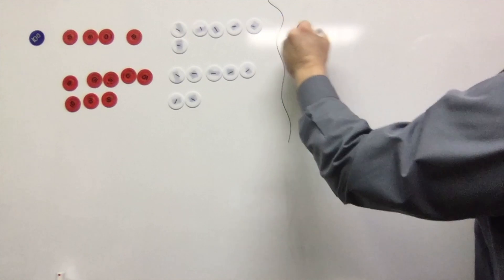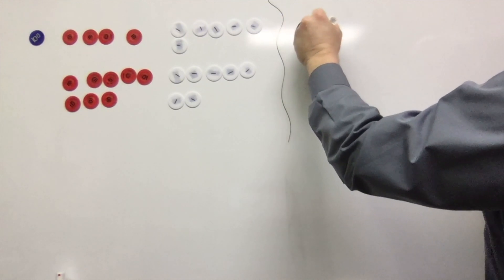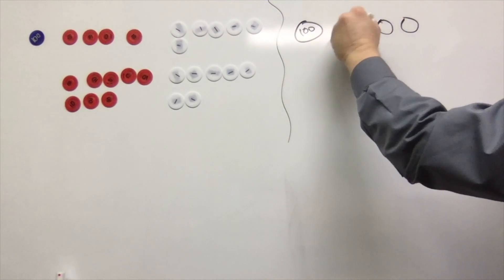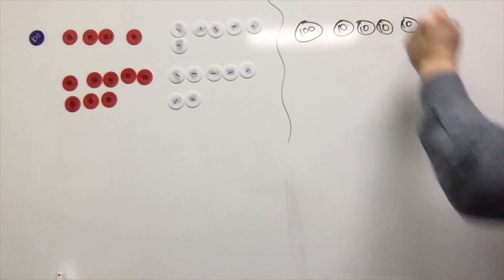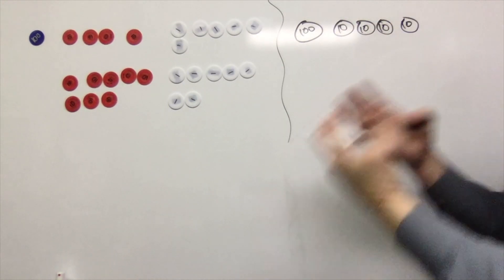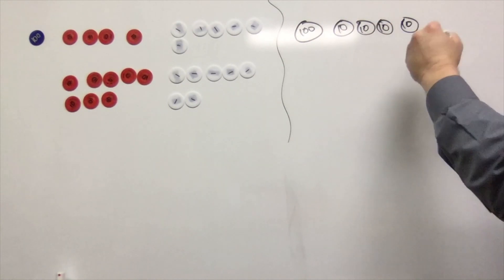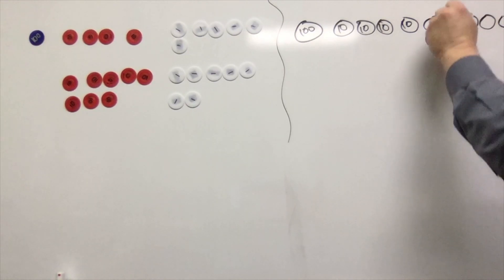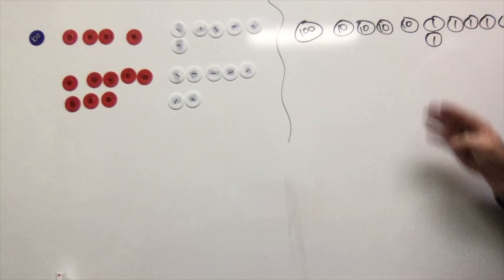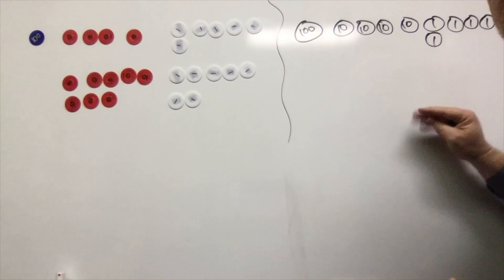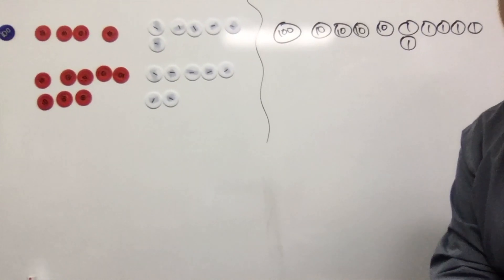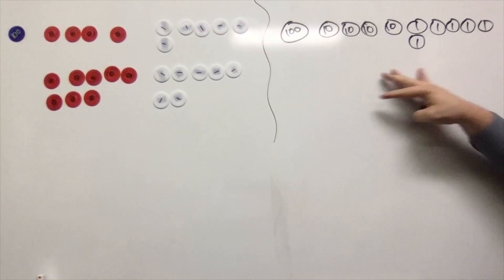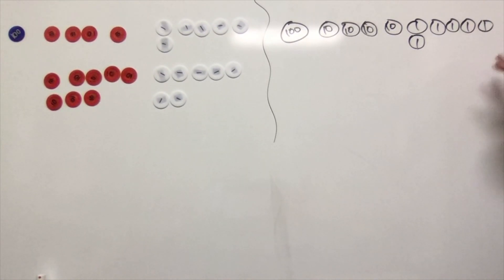One idea is we're going to just label these. We're going to draw the little pictures and label them one, two, three, four, five, six. Boom, right there — there's our 146.